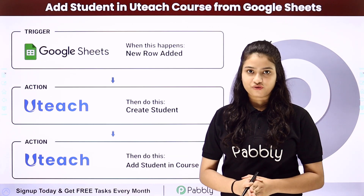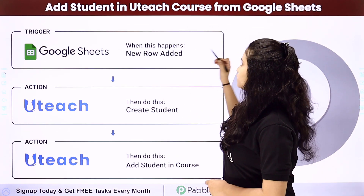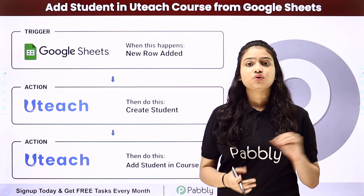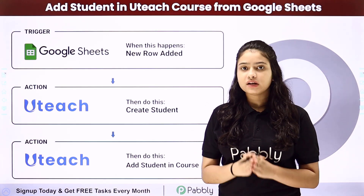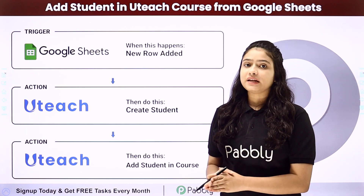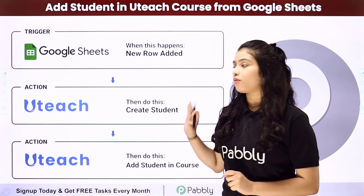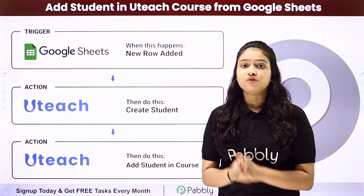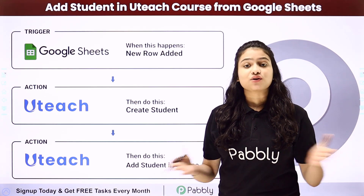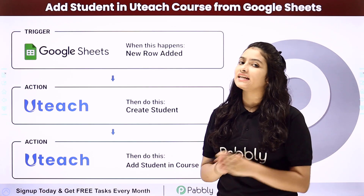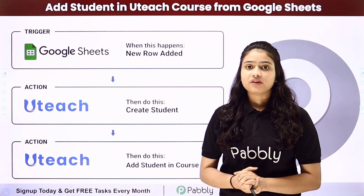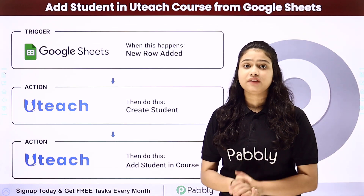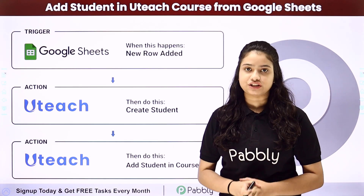Hello everyone. In this video we are going to learn how to add a student in a Uteach course from Google Sheets. Whenever a new row is added in Google Sheets with the details of a person, automatically the same person should be added as a student in my Uteach account and that student should also be enrolled for a particular course automatically in Uteach. To do this we are going to use Pabbly Connect, which is an amazing automation and integration software.